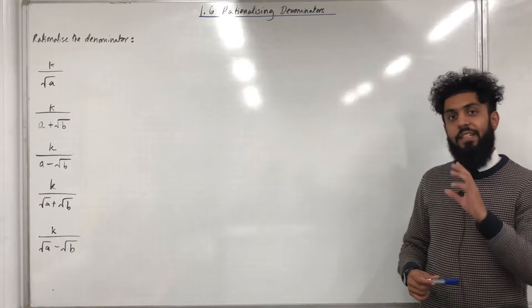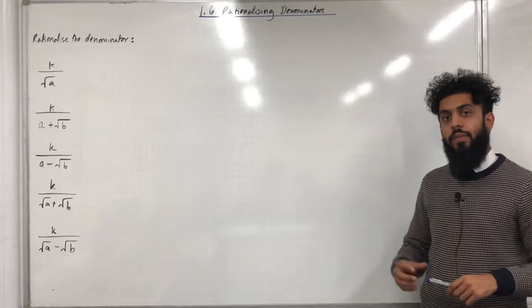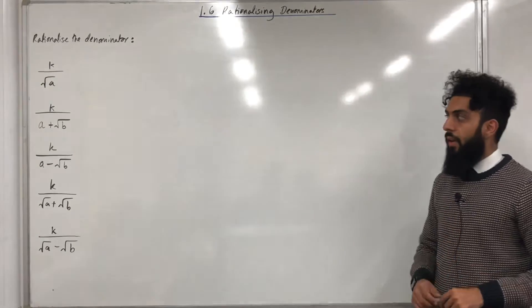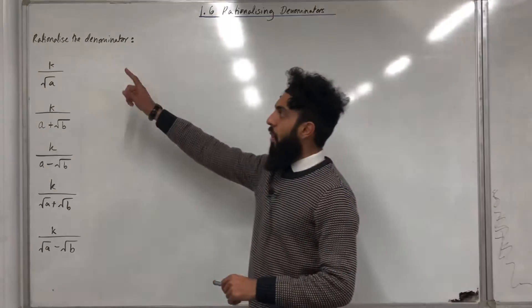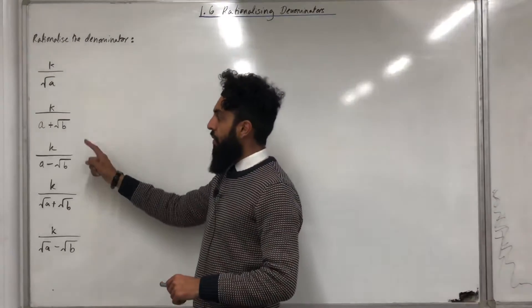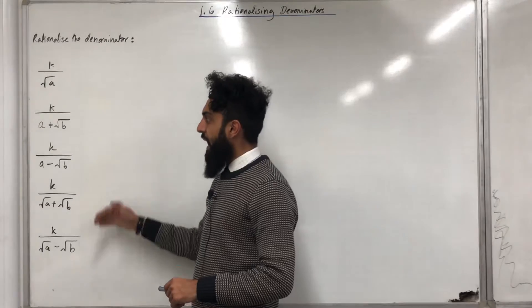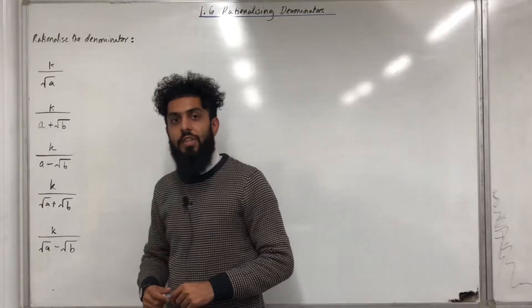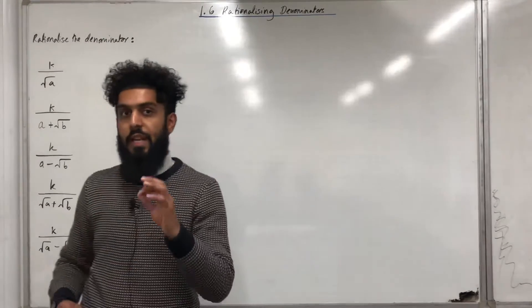Rationalising the denominator just means getting rid of the square root in the denominator. Over here I've got 1, 2, 3, 4, 5 different fractions I want to rationalise the denominator of.